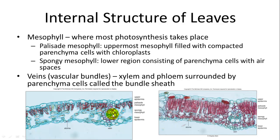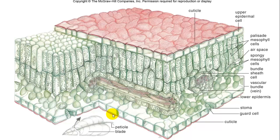Here's a cross-section showing the different layers. You have the epidermis, which forms the waxy cuticle layer. Then the palisade mesophyll cells, bunched together with lots of chloroplasts for photosynthesis. Below that, the spongy mesophyll cells with lots of air spaces. Vascular bundles carry veins through the leaf. And here's a stoma — singular for stomata — with the guard cells that open and close it.